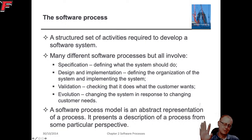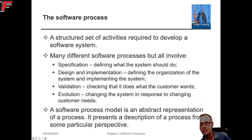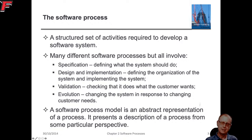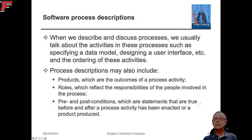A software process is a structured set of activities required to develop a software system. That could include specification, design and implementation, validation, and evolution, which we talked about at the end of the last chapter. There are lots of ways we can describe how the software process works.